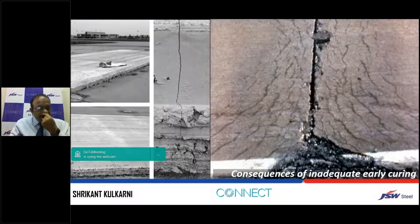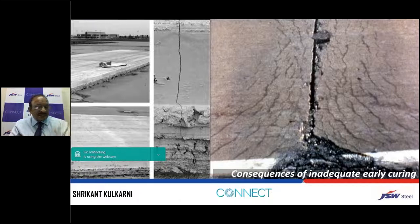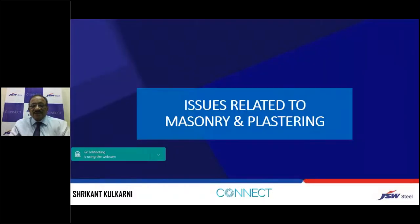If you don't cure the concrete, the consequence of inadequate curing is early plastic shrinkage cracking — the whole slab will develop many cracks. When cracks appear, the strength-carrying capacity goes down, leakages lead to corrosion of steel, and many other problems follow. Now we will talk about a few issues related to masonry and plaster.